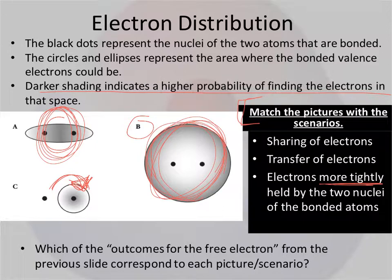So of the outcomes for free electrons from the previous slides, this one that's being tightly held between the two, that's going to have to be your F and your F. So altogether, it cancels out, but definitely both of them are fighting for that pair equally, and so it's looking like this.